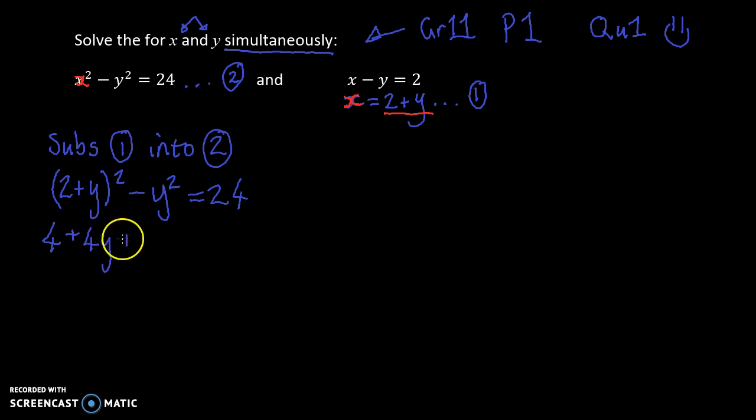4 plus 4y plus y squared minus y squared is equals to 24, and that is beautiful, because y squared minus y squared gives us nothing. So far easier to solve for y. And I'm just going to do this nice and fast. You are an intelligent individual. You can get it. Okay, so we've solved for y.